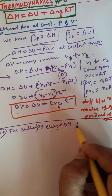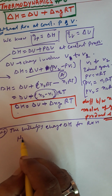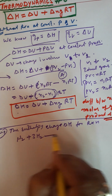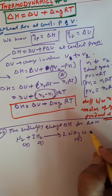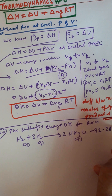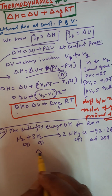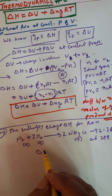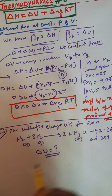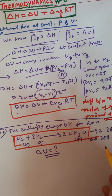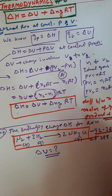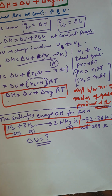अब आपके पास एक reaction दी है: N2(g) + 3H2(g) → 2NH3(g), ΔH = -92.38 kJ at 298 K temperature. Then calculate — हम calculate करेंगे ΔU। ध्यान रखो यह equation आपके पास दी हुई है। इसमें value जो है वो enthalpy change ΔH = -92.38 kJ दी है।